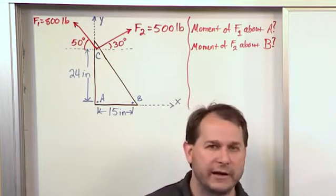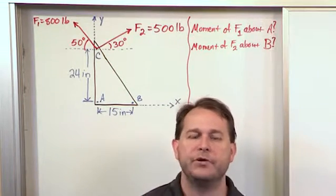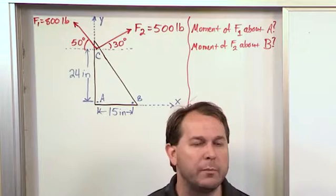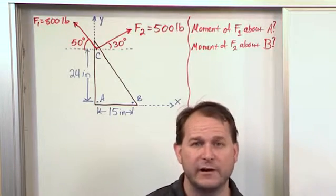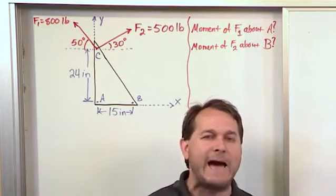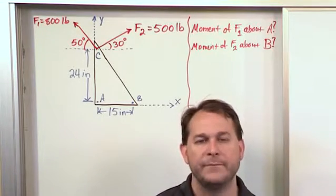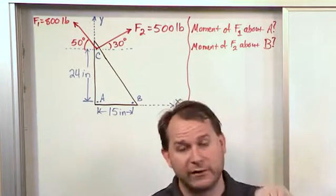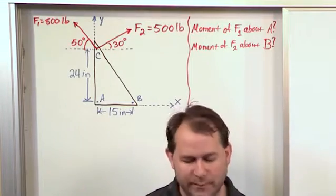So without doing any calculations, just by looking at it, you can determine that one of these moments is going to be in the positive K direction and one in the negative K direction. The moments have to be coming in or out of the board, and one will spin one way while the other spins the opposite way. We've already determined that without doing anything.